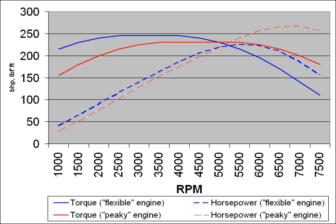A mechanical transmission with a selection of different gear ratios is designed to make satisfactory power available over the full range of vehicle speeds. The goal of the selection of gear ratios is to keep the engine operating in its power band. The narrower the band, the more gears are needed, closer together in ratio.